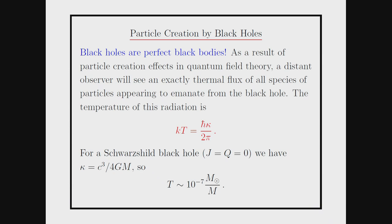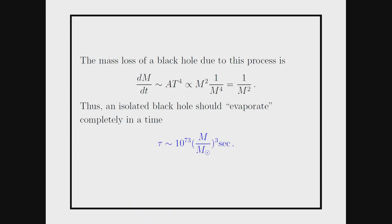In fact, the radiation from a solar-mass black hole would, in the present universe, be totally swamped by the cosmic microwave background. But if you wait long enough, the CMB will redshift and this will be the dominant effect, if nothing is falling into the black hole. One immediate consequence Hawking noticed is that if you do the back-of-the-envelope calculation of the mass loss due to Hawking radiation — it's thermal radiation given by the Stefan-Boltzmann law.